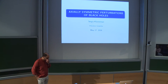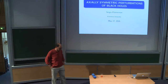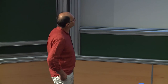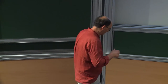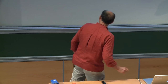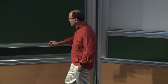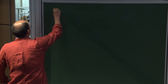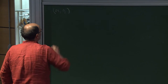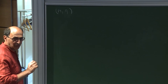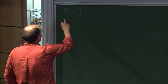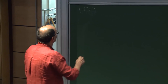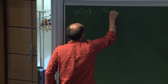Thank you very much for the introduction and thanks to the organizers for this wonderful conference. As the title suggests, I will be talking about the Einstein equation — specifically the Einstein vacuum equations, in which case you are talking about a 4-manifold with a Lorentzian metric G verifying Ricci of G equal to zero.